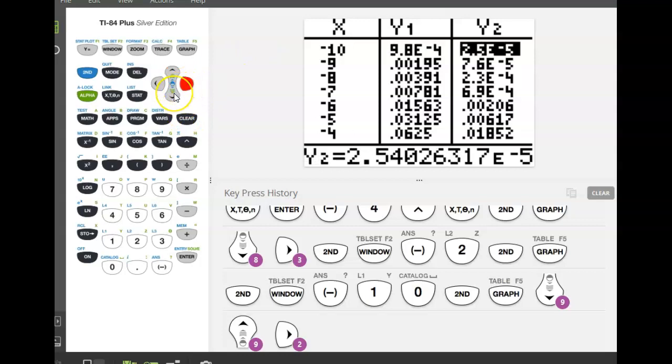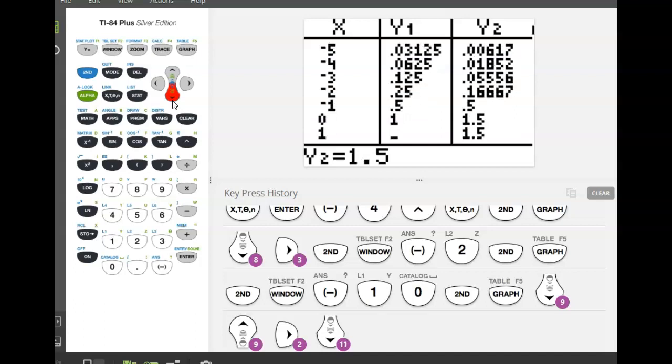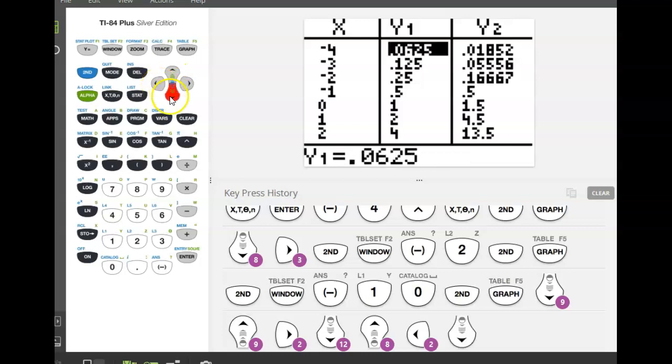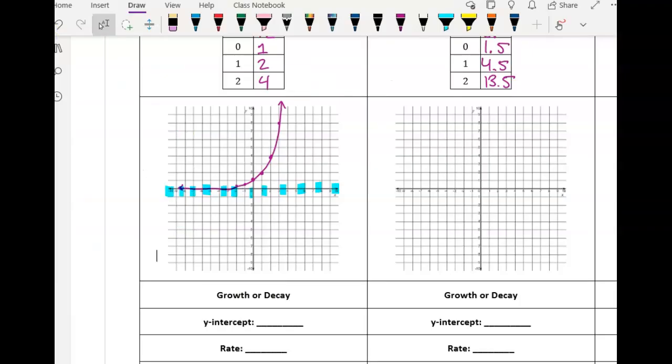So we can see it's getting closer and closer to zero. Whereas over here, as my X values are getting larger, what's happening to my Y values? They're actually getting bigger in this case. And so we want to pay attention to this. As I get more negative, I'm getting closer and closer to zero. Well, that's talking to me about that asymptote there.